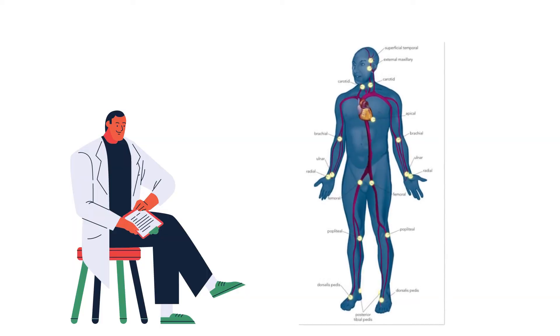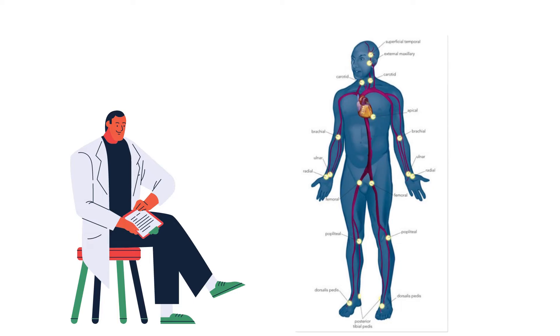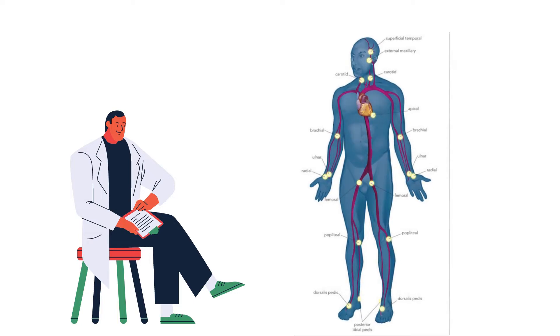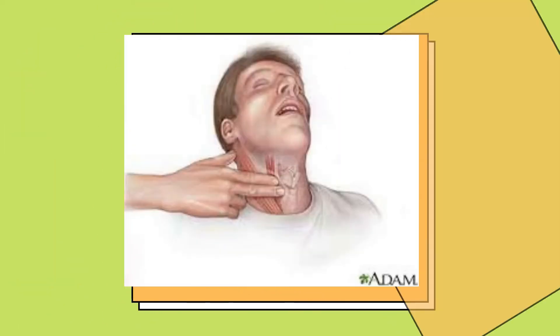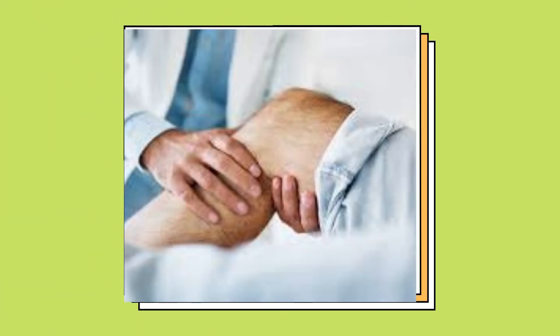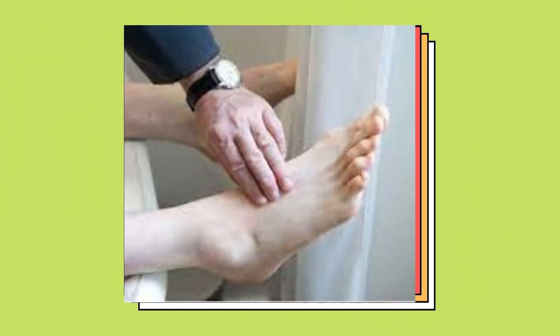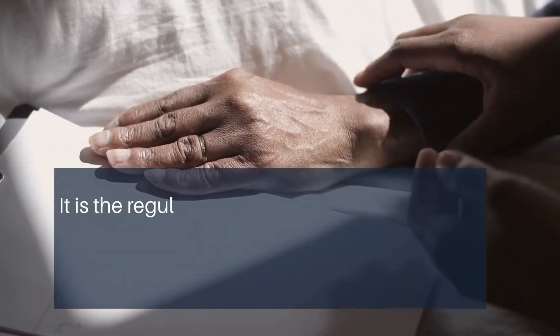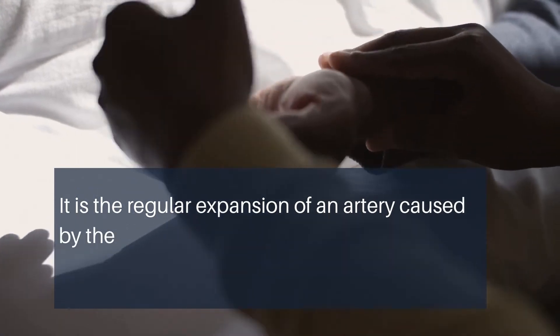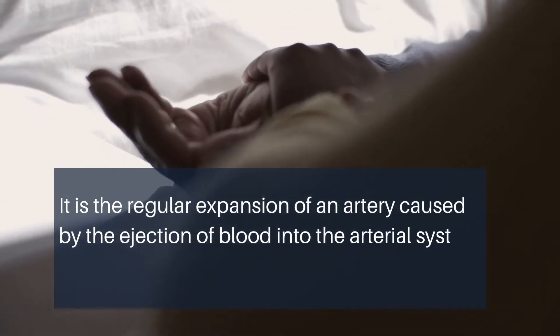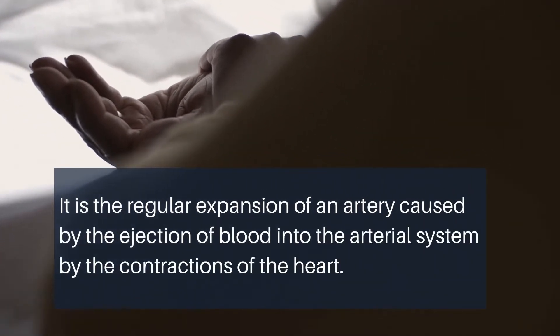The pulse can be palpated in any location where an artery can be compressed near the body's surface, such as the neck, wrist, groin, behind the knee, near the ankle joint, and on the foot. By definition, it is the regular expansion of an artery caused by the ejection of blood into the arterial system by the contractions of the heart. We must learn some of the attributes of pulse in clinical practice, which help us understand cardiac activity and its functionality.